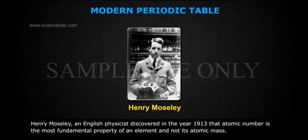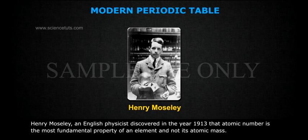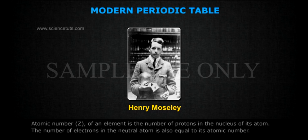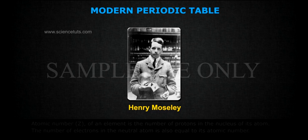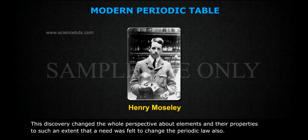Henry Moseley, an English physicist, discovered in the year 1913 that atomic number is the most fundamental property of an element and not its atomic mass. Atomic number Z of an element is the number of protons in the nucleus of its atom. The number of electrons in the neutral atom is also equal to its atomic number. This discovery changed the whole perspective about elements and their properties, such that a need was felt to change the periodic law also.